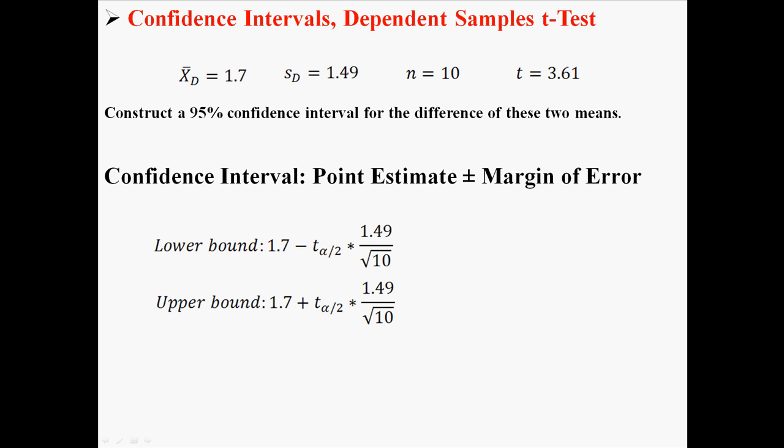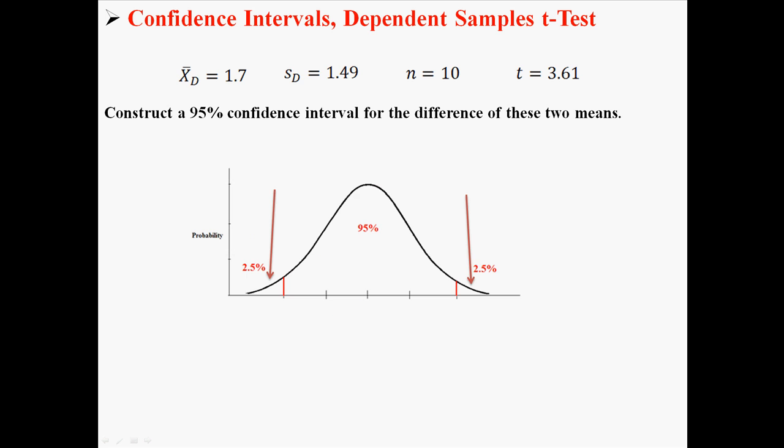All we need to do is find out what our t would be in this case. We're constructing a 95% confidence interval, that means our alpha is .05. When we look up our t, we're going to use an alpha of .05. We're also going to need degrees of freedom. In this case, degrees of freedom for a dependent samples t-test is just n minus 1, or 10 minus 1, so it's 9.